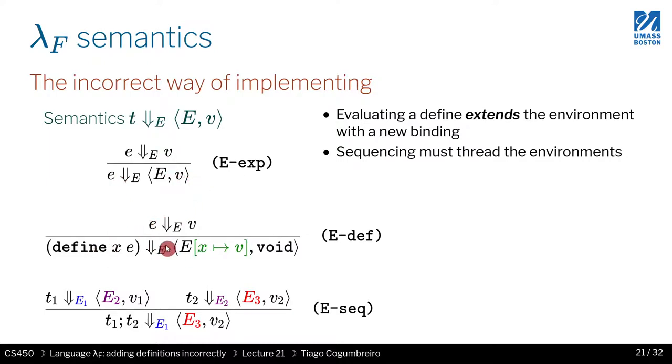Now for a define, how do we evaluate that? We have the input environment, and what we do if we evaluate X, we want to assign the result of evaluating E into X. How do we do that? Well, very simple. We use the evaluation function that we learned in module four, evaluate that down to V by using the input environment. So far, no surprises.